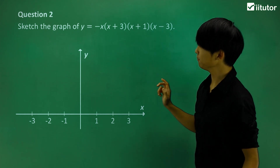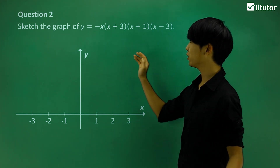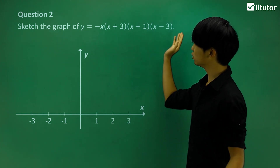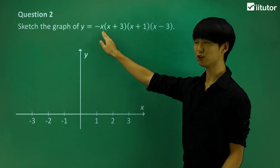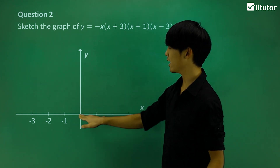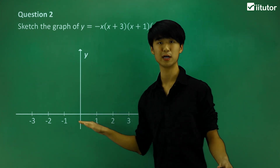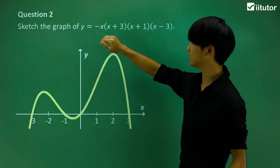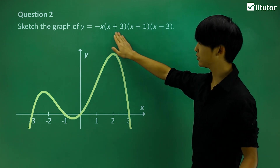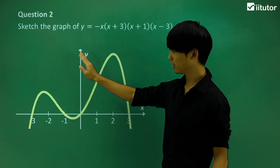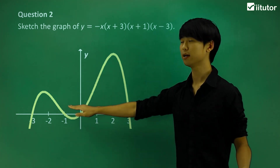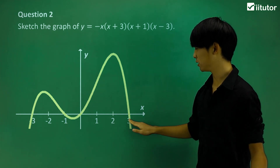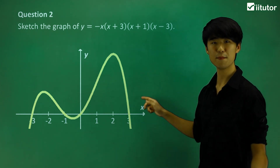Moving on to the next question, we have a very similar one except it's a negative graph, so we know it's going to be an upside-down quartic. Plotting the roots on the x-axis: that x term means we have a root at x equals 0, the origin. The roots are x equals negative 3, x equals negative 1, x equals 0, and x equals positive 3. Joining it all up gives us a negative quartic graph.